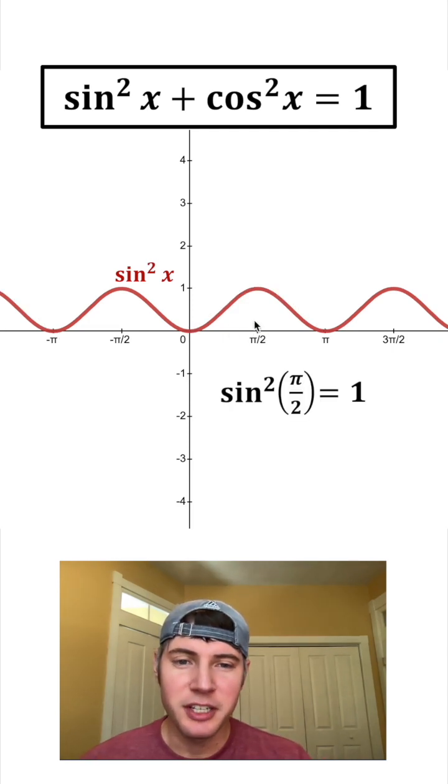So the sine squared of pi over 2 is equal to 1. We can tell that because the height of the graph is 1 at x equals pi over 2.